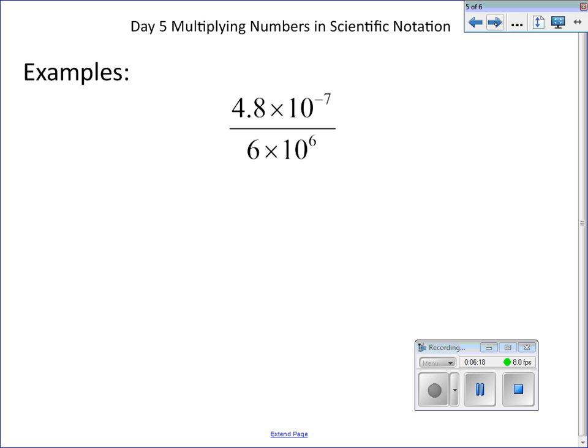Let's look at one more example. First we're going to regroup. Then we're going to type into our calculator 4.8 divided by 6, and we get 0.8. Bring the x straight down. And by the way, this should be telling us that we're not quite in scientific notation, so we know we're going to have to do that extra step.